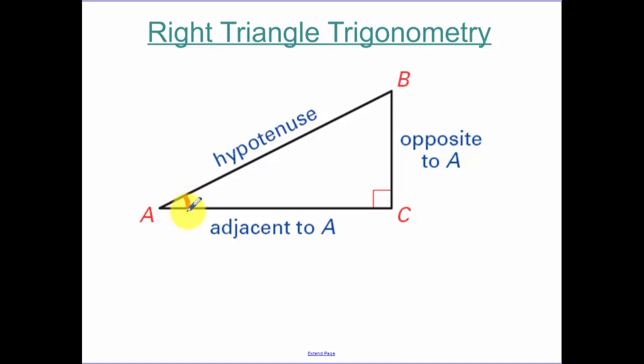We have angle A. When we're talking about angle A, side BC is the side that's opposite to angle A. The hypotenuse is the longest side that's opposite of our right angle. And one of the sides that makes up angle A that's not our hypotenuse is the side that's adjacent to A.